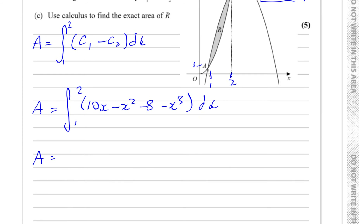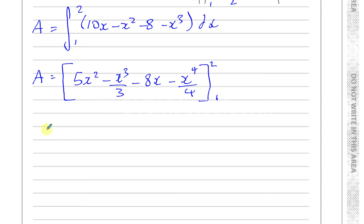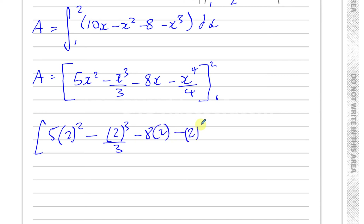Integrating each term: 10x becomes 5x squared, minus x squared becomes minus x cubed over 3, the constant minus 8 becomes minus 8x, and minus x cubed becomes minus x to the power 4 over 4. We substitute the limits 2 and 1. For the upper limit 2: 5 times 4 minus 8 over 3 minus 16 minus 16 over 4. For the lower limit 1: 5 minus 1 third minus 8 minus 1 quarter.